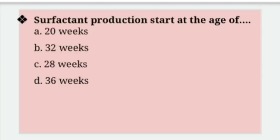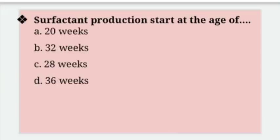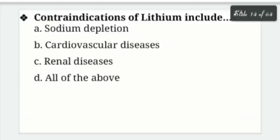Surfactant production starts at the age of — surfactant production kab start hota hai? Options: 20 weeks, 32 weeks, 28 weeks, 36 weeks. It starts at 24 to 28 weeks, so the right answer is option C — 28 weeks.